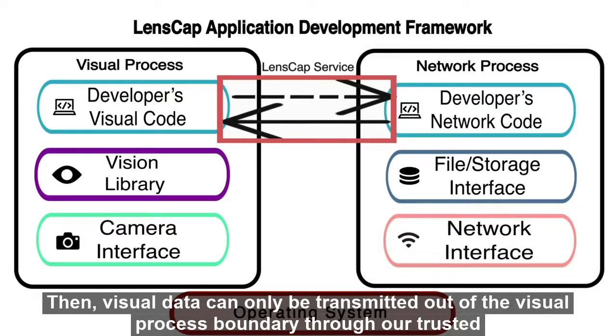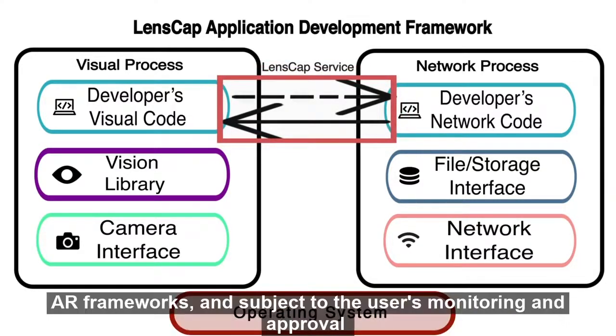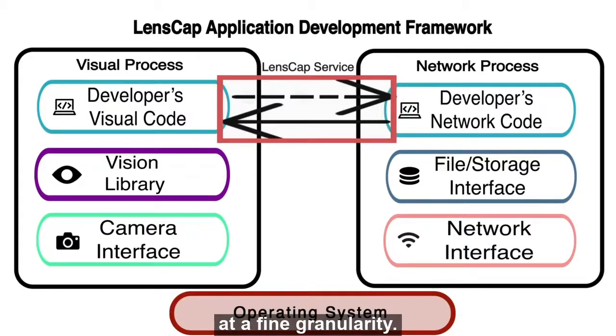Then, visual data can only be transmitted out of the visual process boundary through our trusted Landscap communication services, wrapped around trusted AR frameworks and subject to the user's monitoring and approval at a fine granularity.